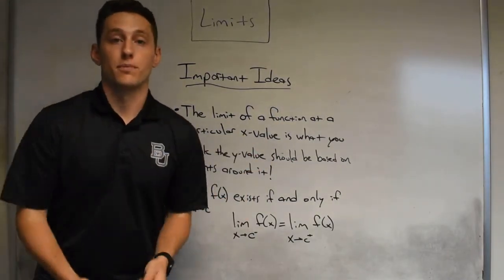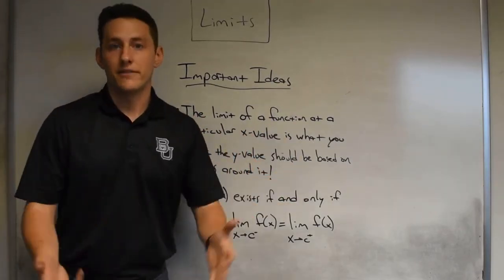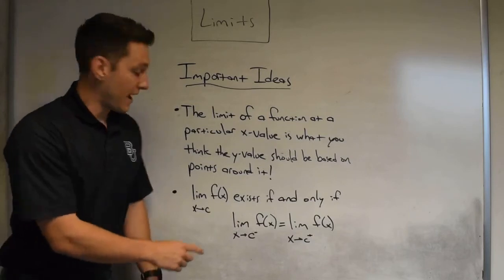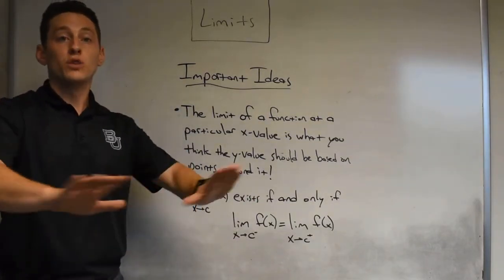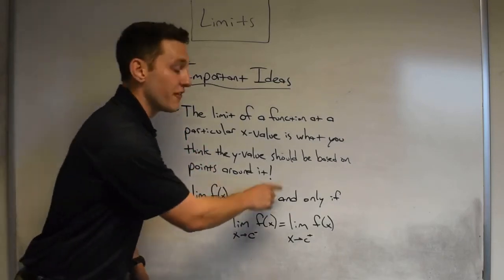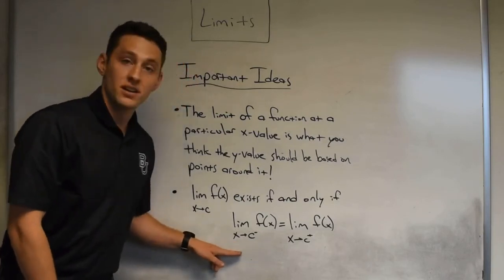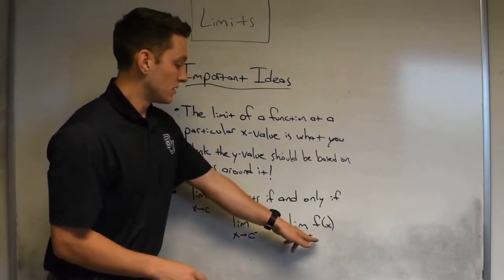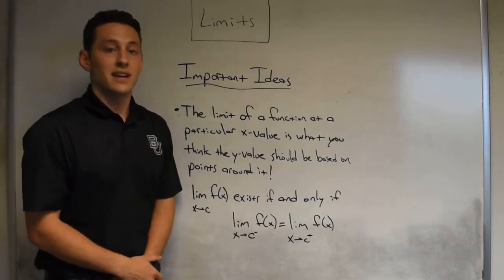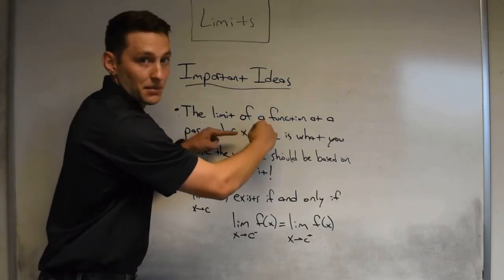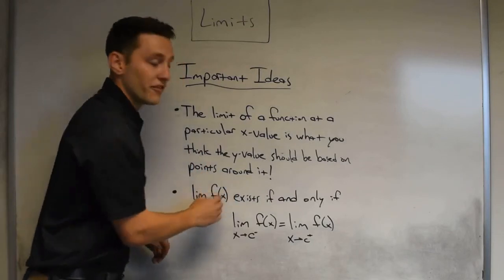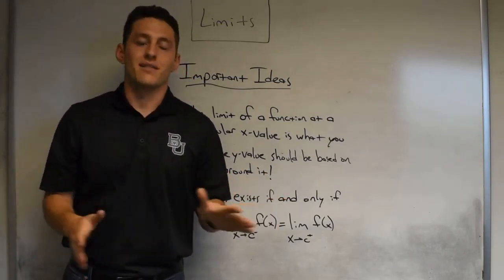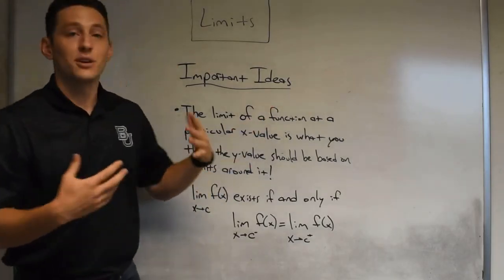The x value is super important — dependent on the x value, you're going to have different limits. So pay attention to the x value; that tells you from where you're going to be estimating. Second point: the limit of our function as x approaches some number c will only exist — the full limit — if and only if the limit from the left hand side, denoted with a superscript negative sign, equals the limit from the right hand side, denoted by a superscript plus sign. If the right hand limit equals the left hand limit, that's when your full limit will exist — with the exception that if infinity is involved, the limit just flat out will not exist. Thanks for tuning in to the idea behind limits and the graphics, and we'll see you next time.